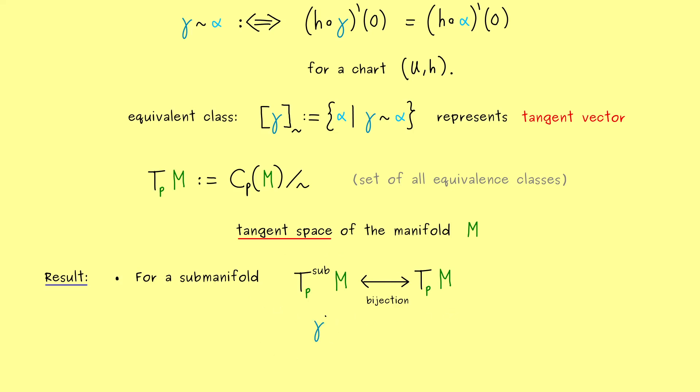Indeed, on the left hand side here, we would have a vector in R^n, and this one is given by the derivative of the curve gamma at the point 0. And on the right hand side, we would simply take the whole equivalence class of this curve gamma. Now, this is a well defined bijection, because all the curves in the equivalence class have the same tangent vector on the lower level. And then of course, it's no problem to push this tangent vector to the upper level.